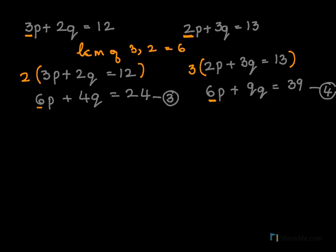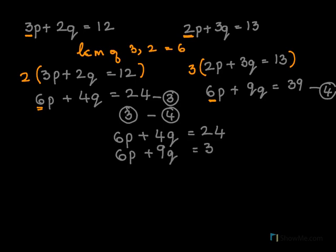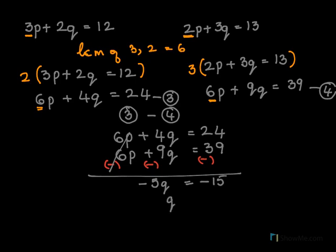Now the coefficients are equal, see this is 6 here and this is 6 here. So my equation is ready to be subtracted. So I subtract 3 minus 4 or 4 minus 3, you can do any of what you want. So 6p plus 4q equal to 24, this is one equation. 6p plus 9q equal to 39 is the other equation. Now I need to subtract. Subtract means I need to change the sign. Plus becomes minus, right? And now we cancel this. Here 4q minus 9q is minus 5q and this will be minus 15. So q equal to minus 15 divided by minus 5, so the q is plus 3.